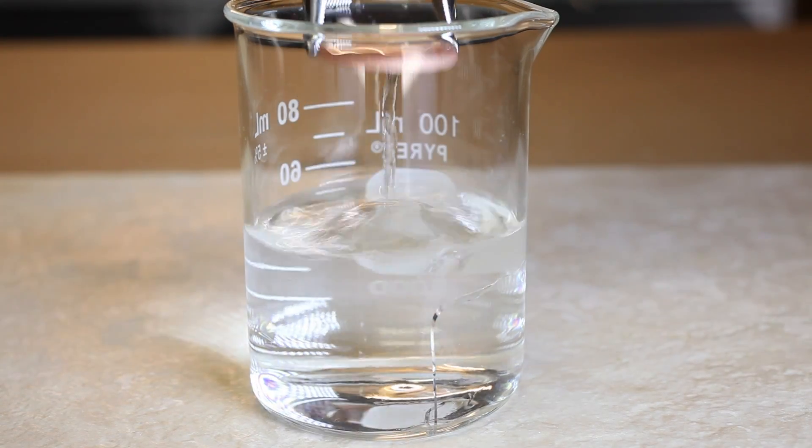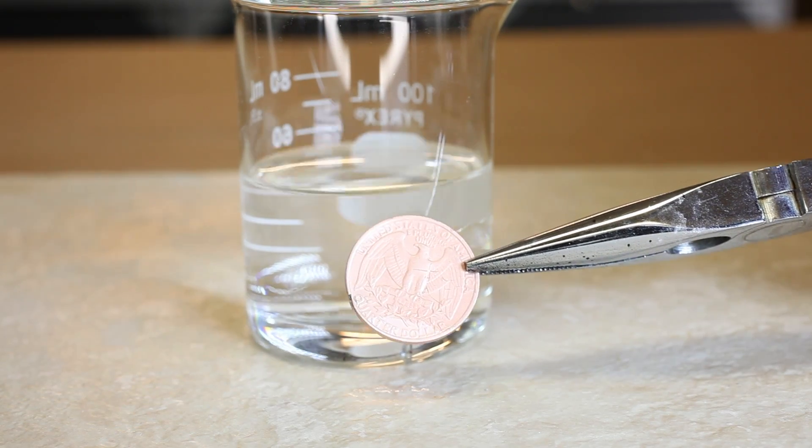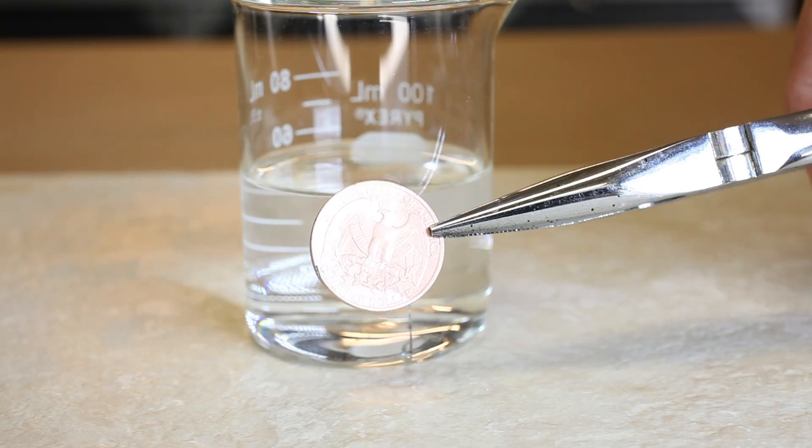During the cooling process, some of the inner copper core of the coin has migrated to the outside, leaving you with a cool copper plated quarter.